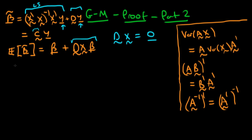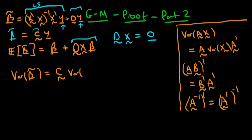Using our form beta tilde = Cy, we can apply the first result and write that the variance of beta tilde equals C times the variance of y times C transposed.